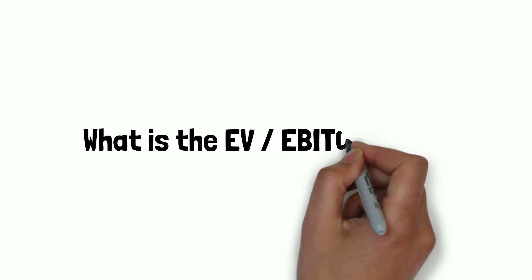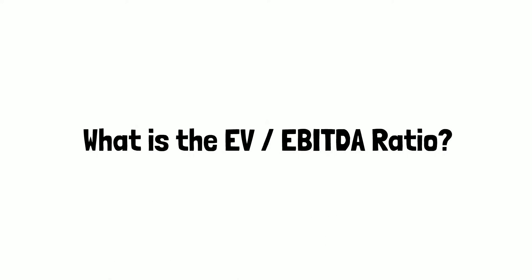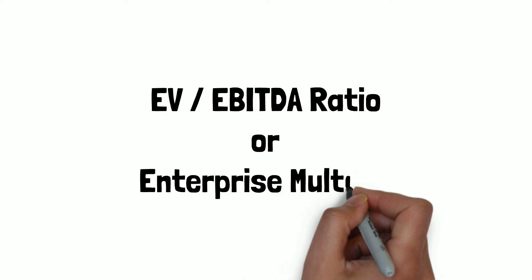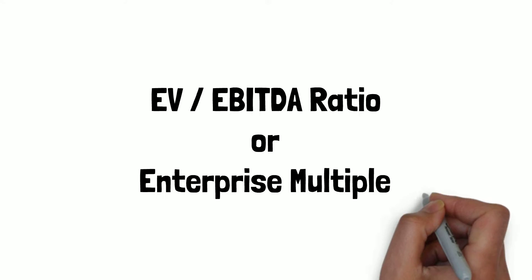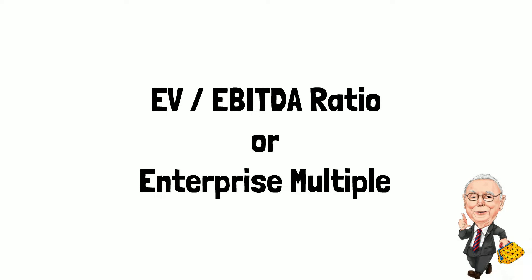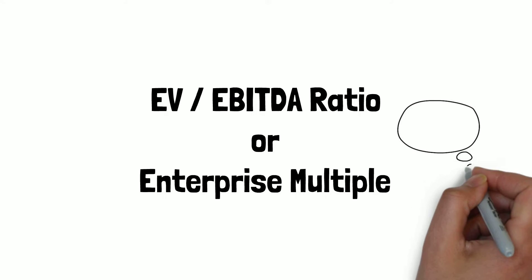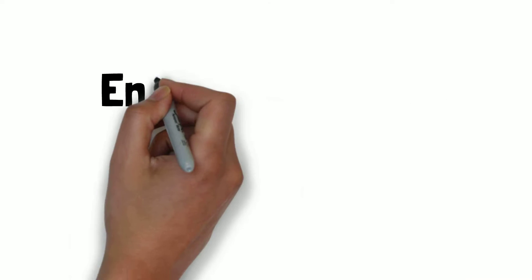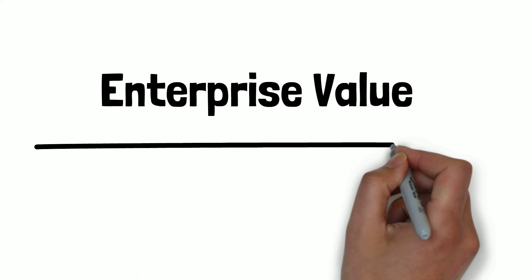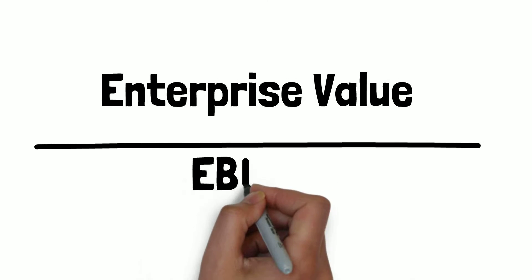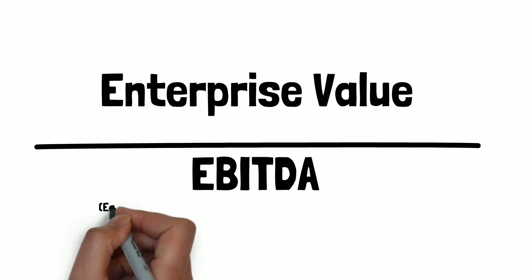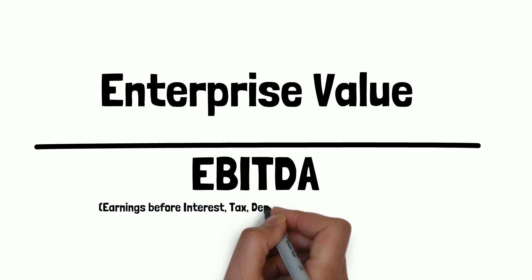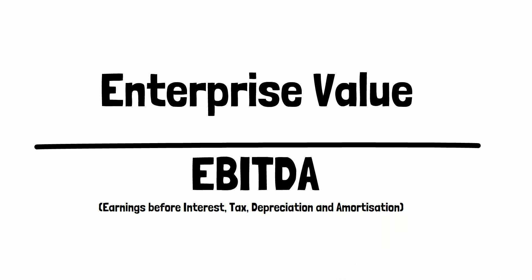What is the EV to EBITDA ratio? The EV to EBITDA ratio, or enterprise multiple, is a valuation metric used by investors to value a company as if it was going to be acquired. It's calculated by taking the company's enterprise value and dividing it by the company's EBITDA, otherwise known as earnings before interest, tax, depreciation and amortization.